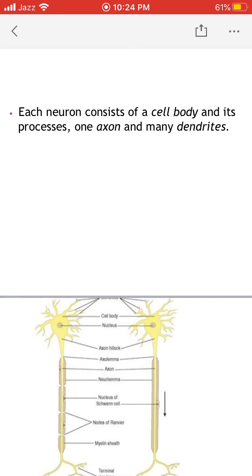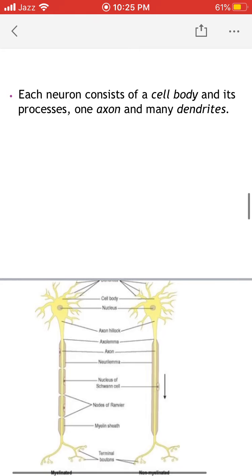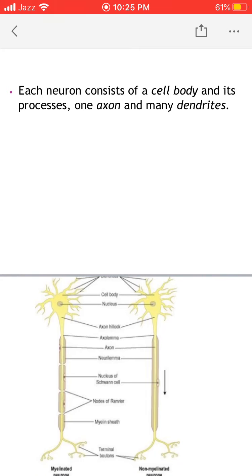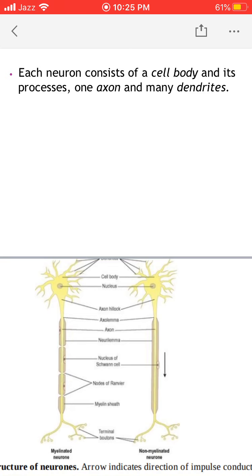On the upper side, you can see multiple processes emerging from the cell body; these multiple processes are known as dendrites. In the lower portion of the diagram, you can see an elongated process moving downward — this process is known as the axon of the neuron. When the axon reaches its target organ, it is divided into many terminal branches known as terminal buttons.